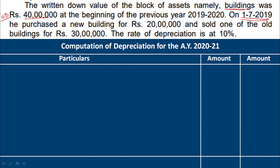But in this case, you can see the purchase was on 1-7. If it is more than 180 days, you can charge full depreciation. So in this date, you will purchase one of the old buildings for Rs. 35 lakh. Building with block — previously one new building purchased and sold for Rs. 20 lakh. So in this case, you will get a solution.